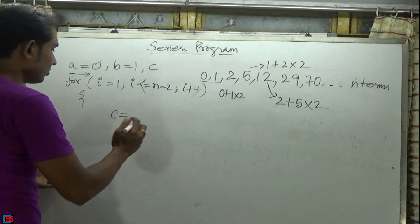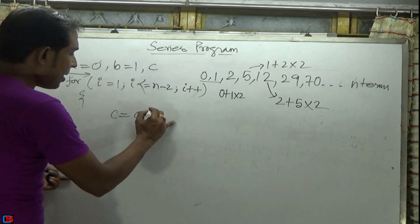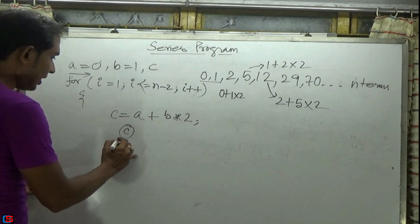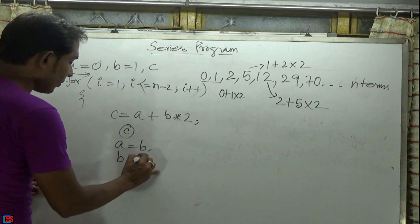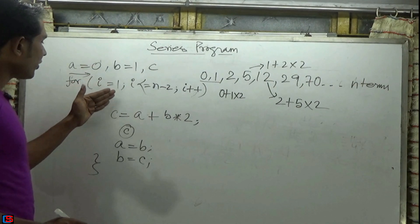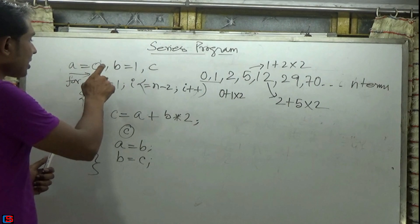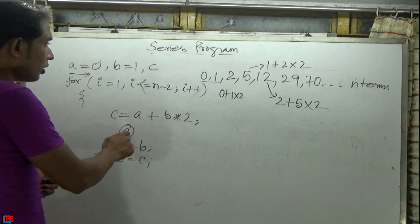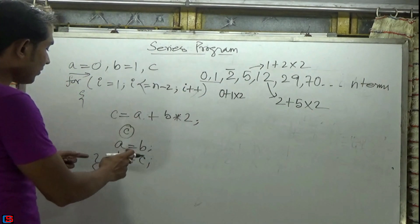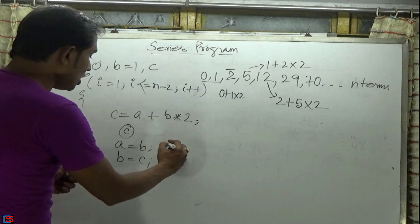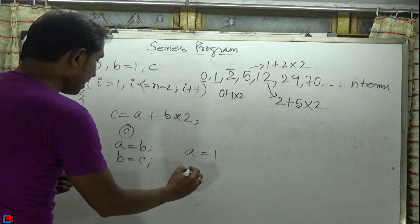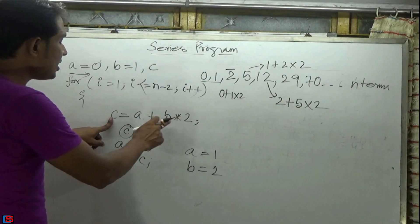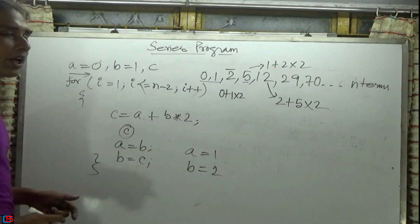Within the loop, the operation is: c equals a plus b into 2. After that, I print c, then set a equals to b and b equals to c. For example, a=0 and b=1 are already printed. So c equals 0 plus 1 into 2, which is 2. Then a becomes 1 and b becomes 2. Next iteration: 1 plus 2 into 2 equals 5, so 5 is printed.